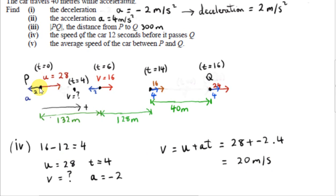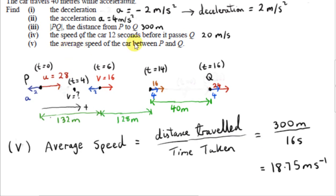We expect a speed between 28 and 16, and 20 indeed is. Every second, the car's speed decreases by 2 meters per second: starting at 28, after 1 second it's 26, after 2 seconds 24, after 3 seconds 22, and after 4 seconds it's 20. Finally, we want the average speed of the car between P and Q. The car's speed varies throughout — decreasing for the first leg, constant for the second, and increasing for the third. The average speed is total distance 300 meters divided by total time 16 seconds, giving 18.75 meters per second.